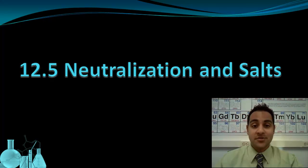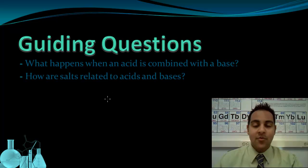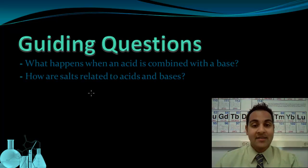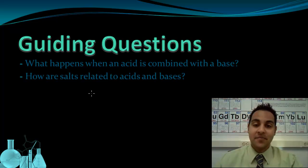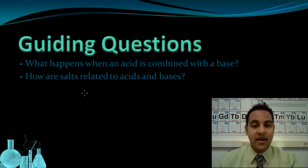Welcome to Neutralization and Salts. We've talked about acids and bases so far, and we know some things about them. We know acids have a very low pH and bases have a high pH. We also know that acids are related to the H+ ion, and bases we relate to the OH⁻ ion. In this lesson, we're going to look at what happens when we combine acids and bases together, and also how salts are related to acids and bases.